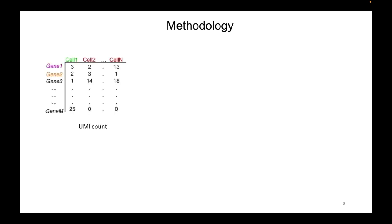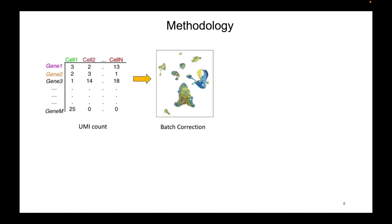The methodology used in our experimentation begins by reading the UMI count file, then proceeding to eliminate batch effects introduced due to different capturing methods. The cells from the samples were batch corrected using a couple of algorithms based on nearest neighbor and correlation techniques.